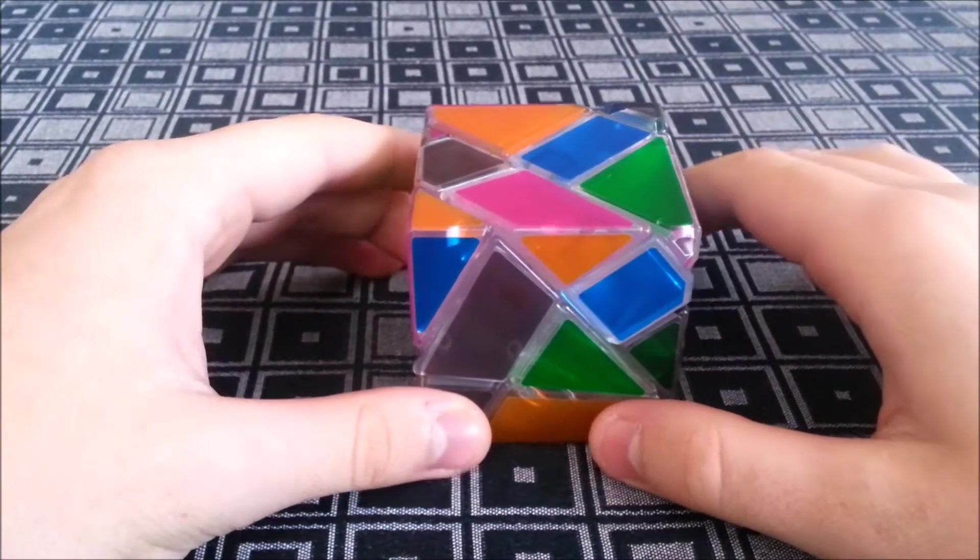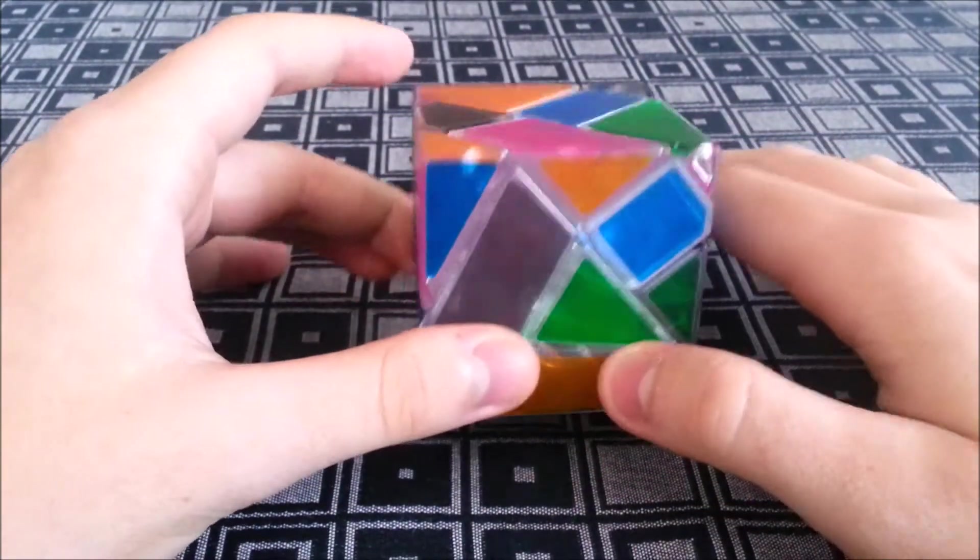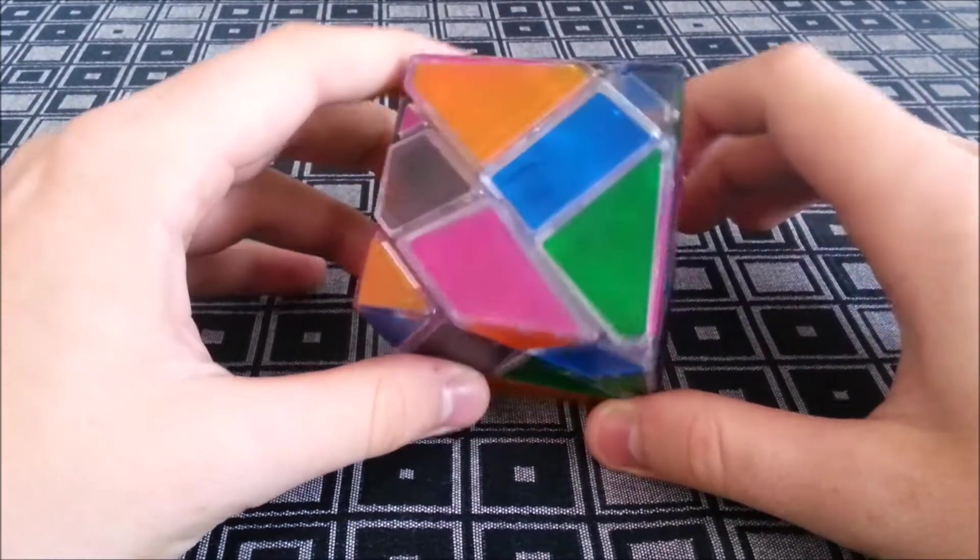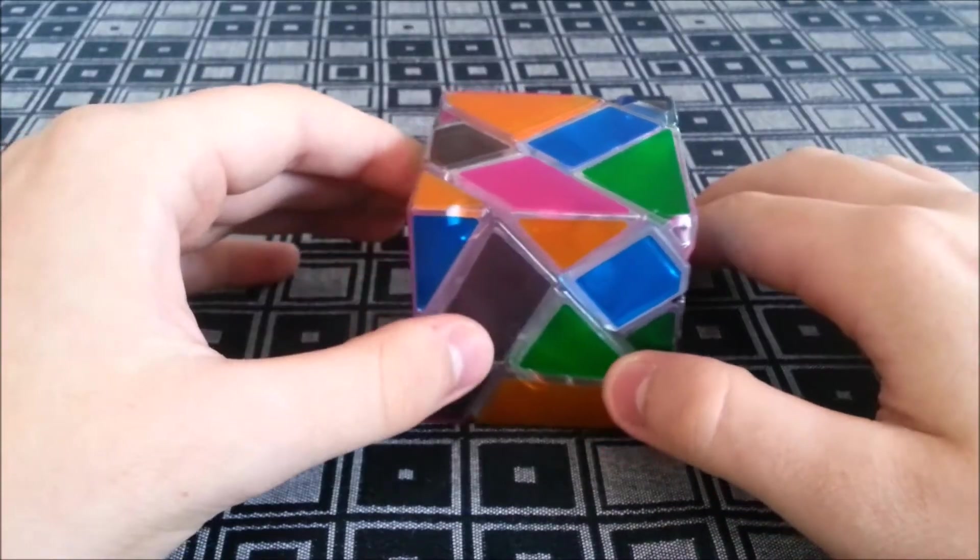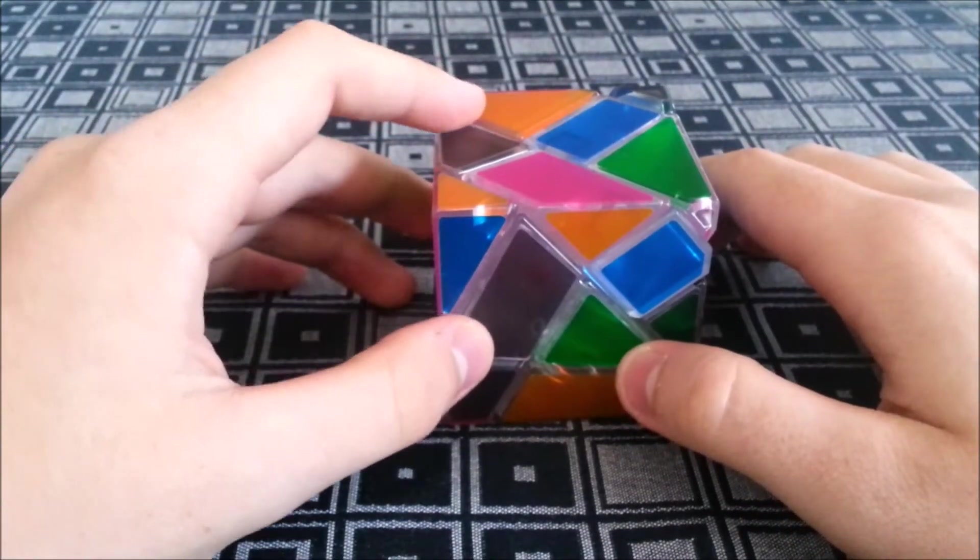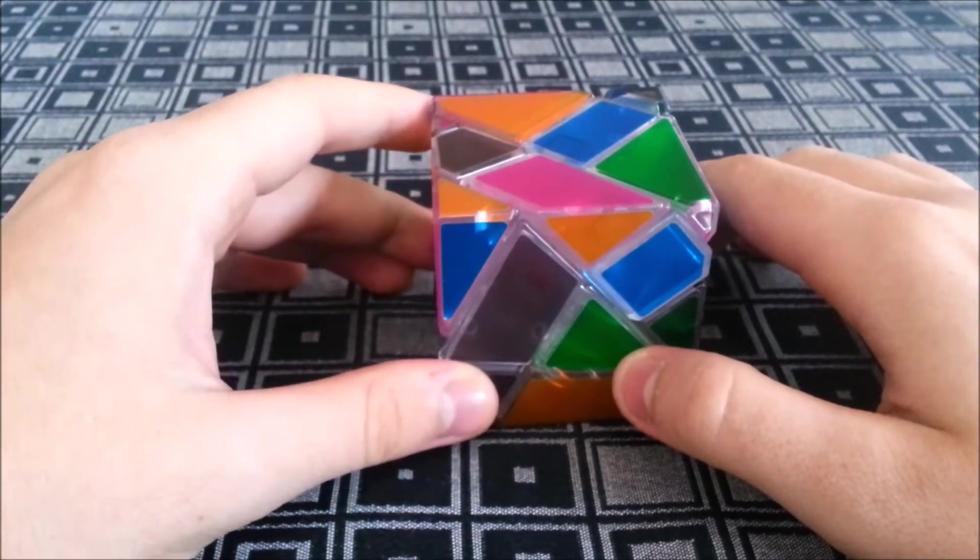Hey everyone, a couple videos ago I said that I'd make a small video on this cube. Now this is a Z-Ghost Cube. You can buy it from the cubicle for 23 US dollars and as of now it is not on speedcube.com.au.